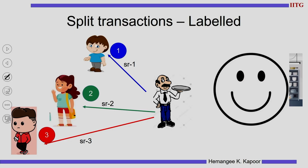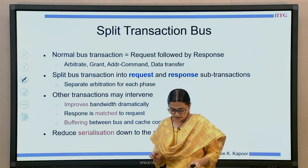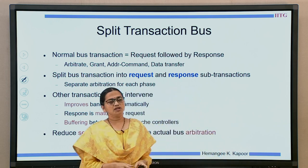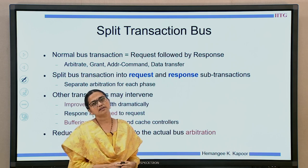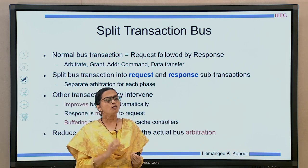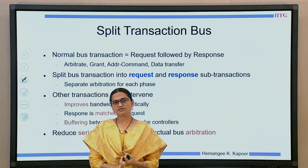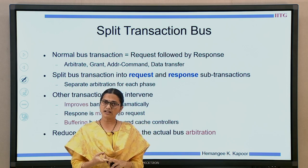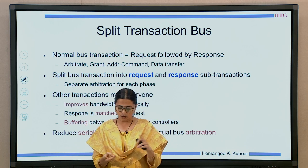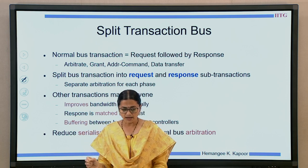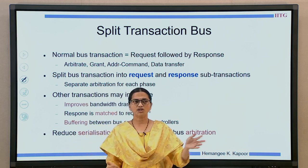This is the idea I am going to import now to a bus. Till the previous topic we had an atomic bus, which consisted of a variety of steps before finishing one transaction. What were the steps? We arbitrate for the bus, then we are granted the bus, and once we get the bus grant we put the address and the command, and once this goes onto the bus the responder — memory or another cache — has to give the data.